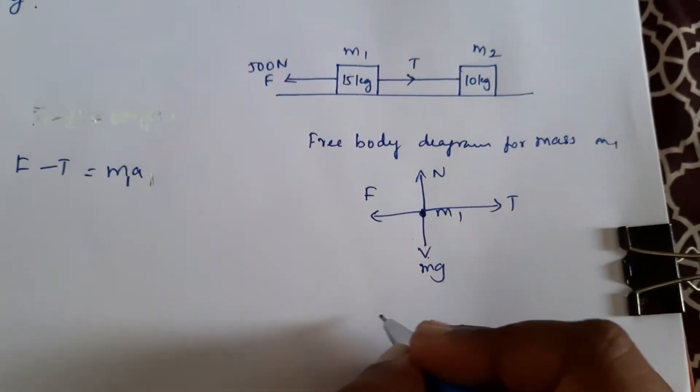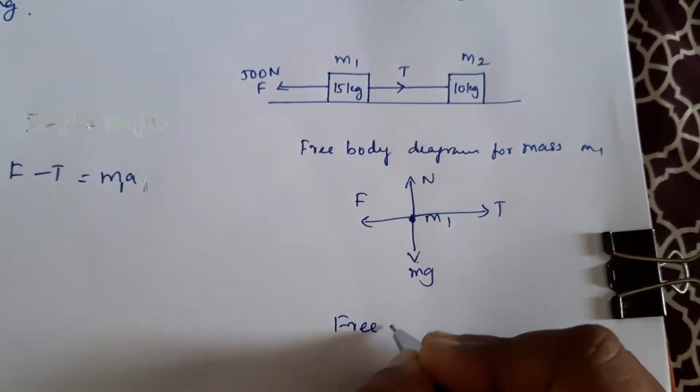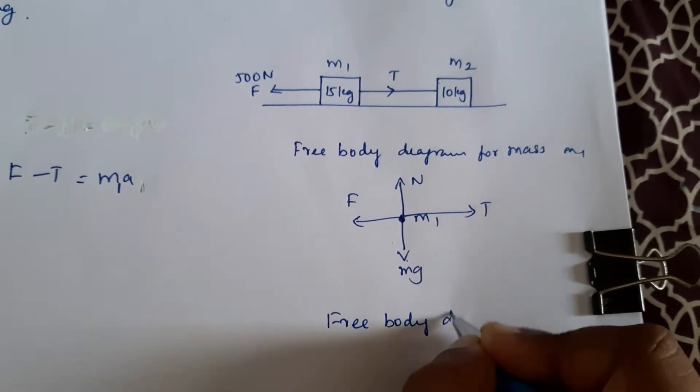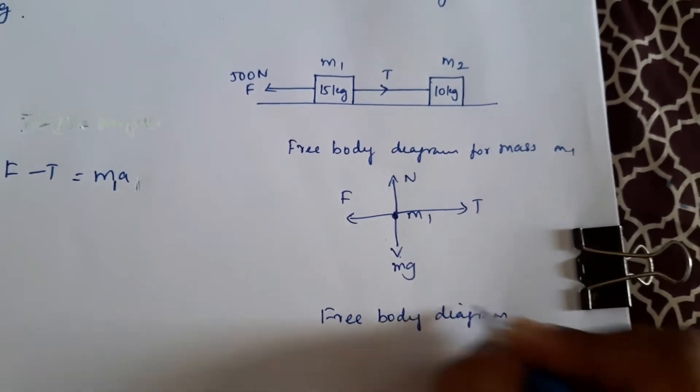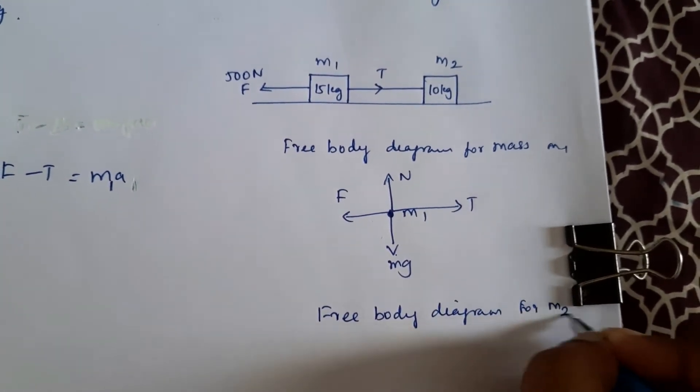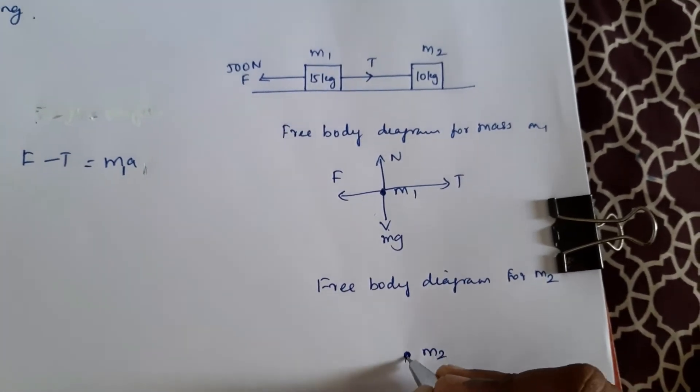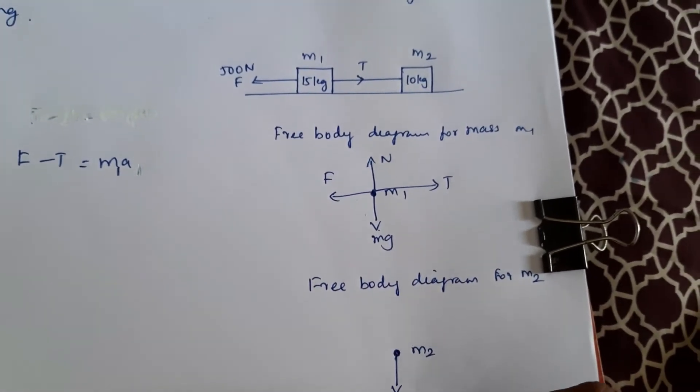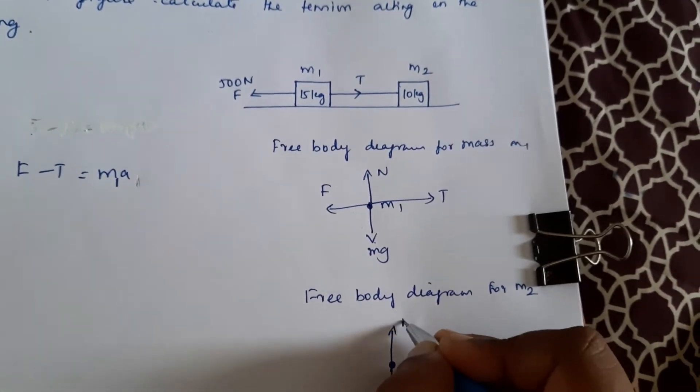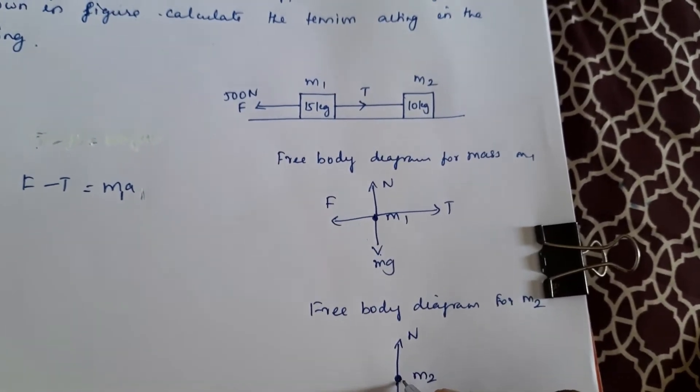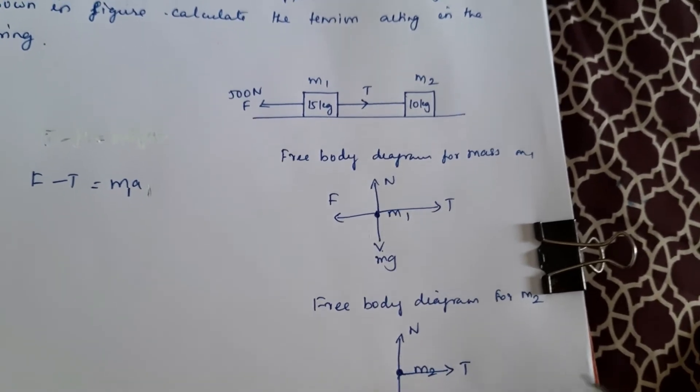Now if you draw the free body diagram for m2, here it is m2. Here it is mg, here it is N. Here only one force will be acting, that is the tensional force.